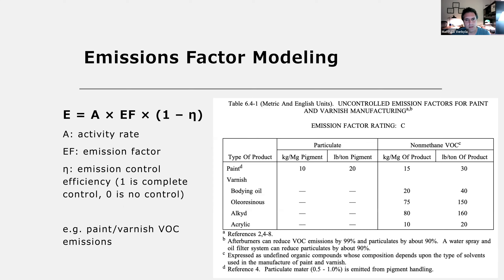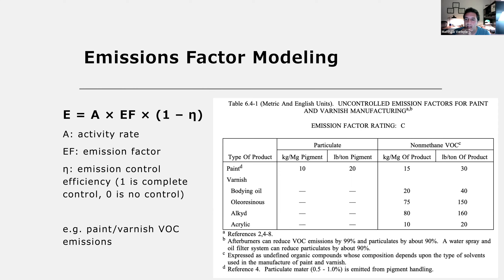Let's walk through some examples. Emission factors are typically presented in tables like Table 6.4-1, which shows uncontrolled emission factors for paint and varnish manufacturing. Each table is rated on a scale of A through E, where a higher rating means the numbers are more accurate. Lower-rated values may be rough estimates. Always pay attention to the emission factor rating when using this approach.